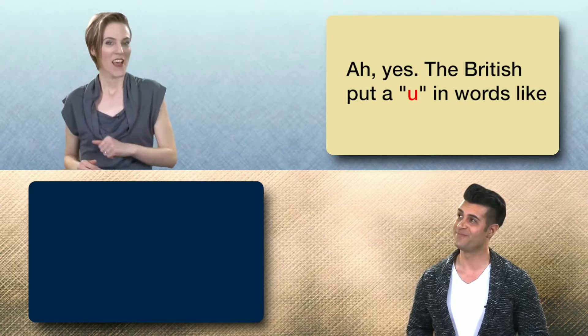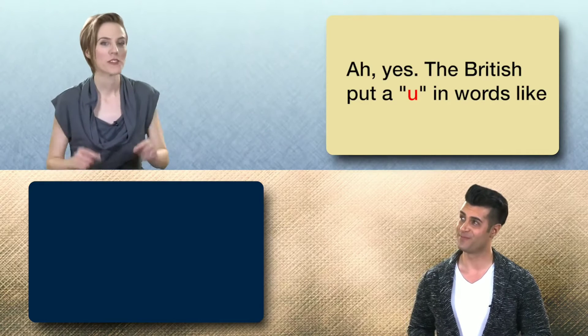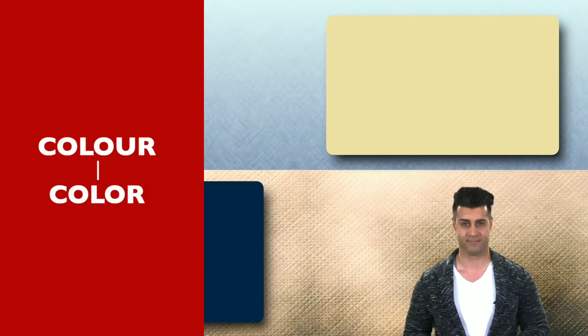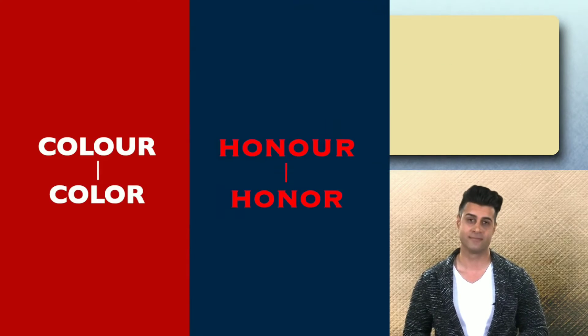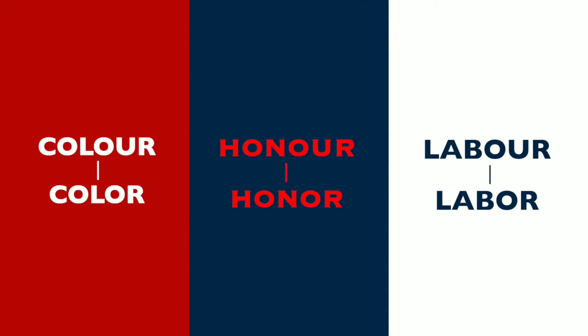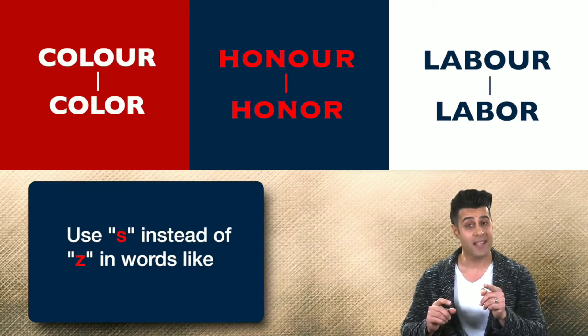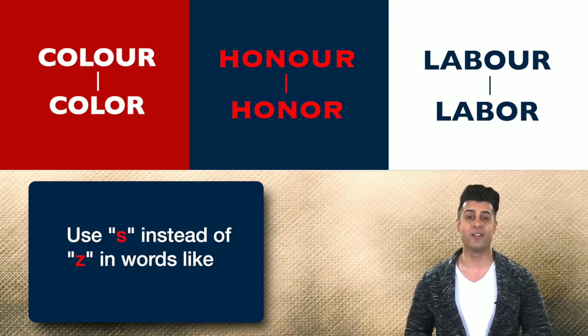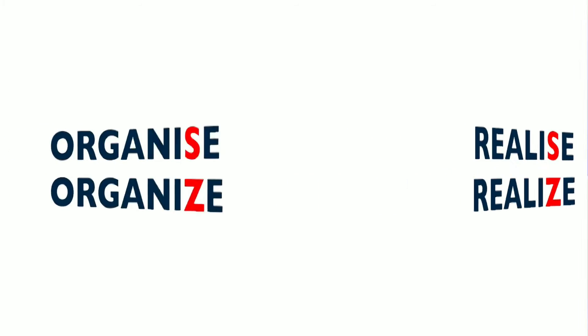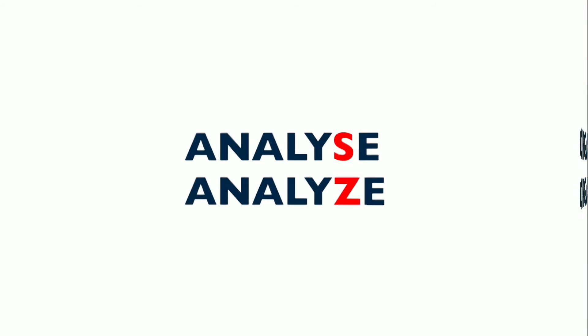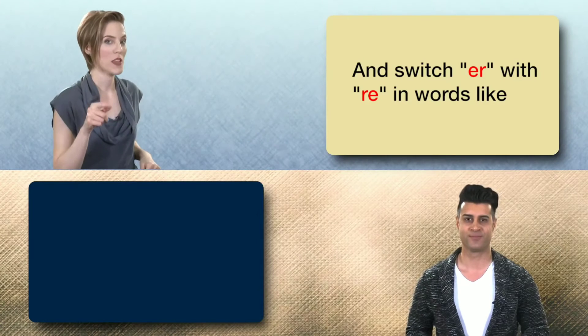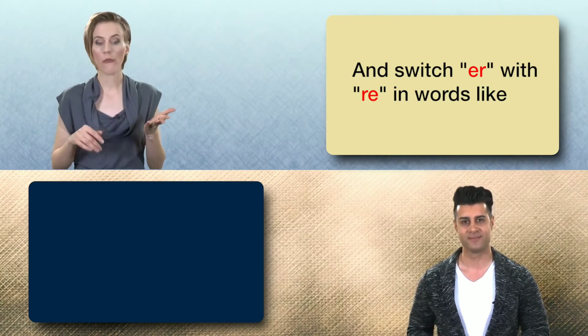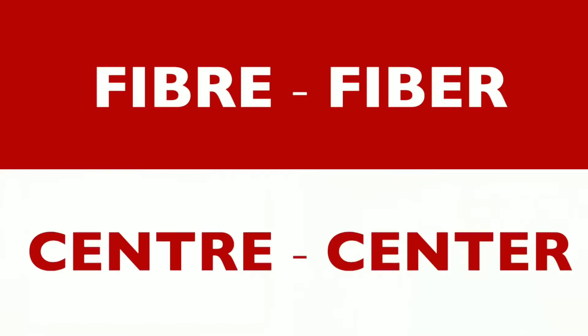The British put a U in words like color, honor, and labor. They use S instead of Z in words like realize, organize, and analyze. And they switch ER with RE in words like fiber and center.